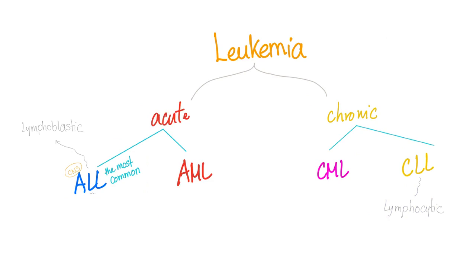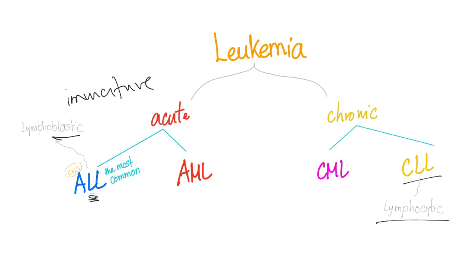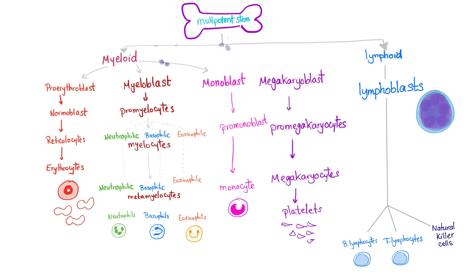Let's review the previous topic. Leukemia is classified into acute and chronic. Acute can be ALL or AML; chronic could be CML or CLL. Note: the 'L' in ALL stands for lymphoblastic, because the cells are immature, while the 'L' in CLL stands for lymphocytic, because those lymphocytes are mature.